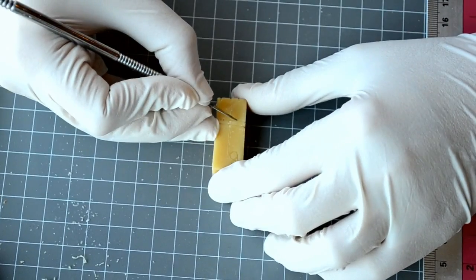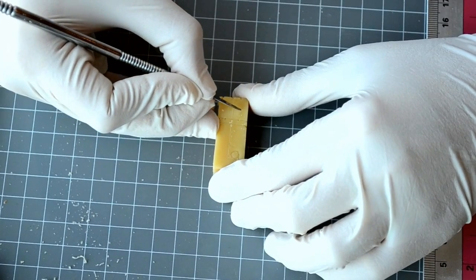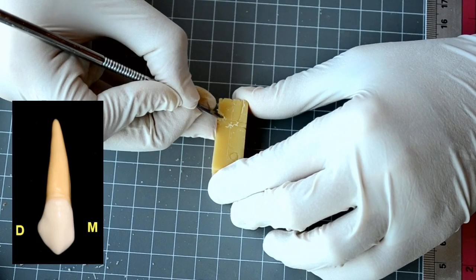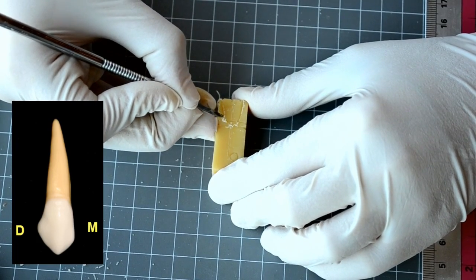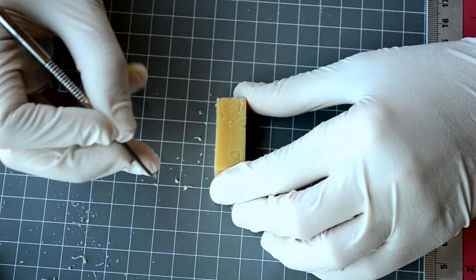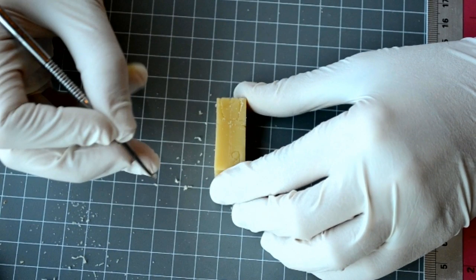After you set your measurements, use your Lecron carver to draw the outline of the tooth, keeping in mind that the mesial outline of the canine is straight, while the distal outline is more convex. Remember that the crest of curvature is located mesially on the incisal third and distally on the middle third.